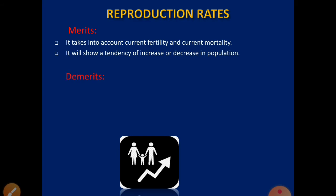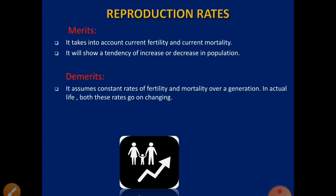The demerits of NRR are: First, it assumes constant rates of fertility and mortality over a generation, but in actual life, both these rates go on changing. NRR considers constant rates of fertility and mortality, but if you go back 10 or 20 years, the fertility rate per woman was 5 or 6, whereas in the present year 2020, the fertility rate per woman is 1 or 2. Generation to generation, the fertility rate keeps changing.